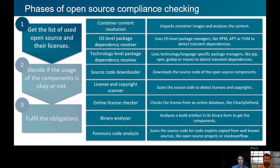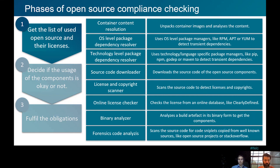There is also an optional binary analyzer step. It can happen that we do not have access to the source code of different components in a product; in that case, binary analysis is needed to analyze the binary artifact. As a last step, there is forensic code analysis, which means scanning the source code for code snippets copied from other places — other open source projects, Stack Overflow, and similar. All of these steps are needed to get the full list of open source components, their licenses, and copyright information.